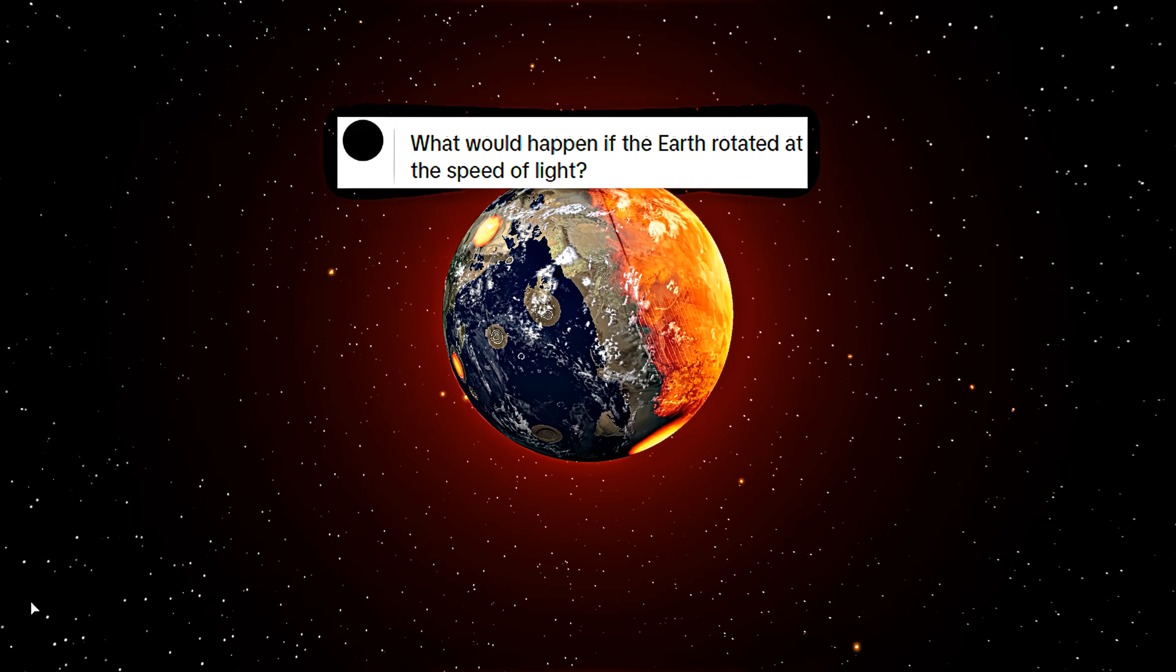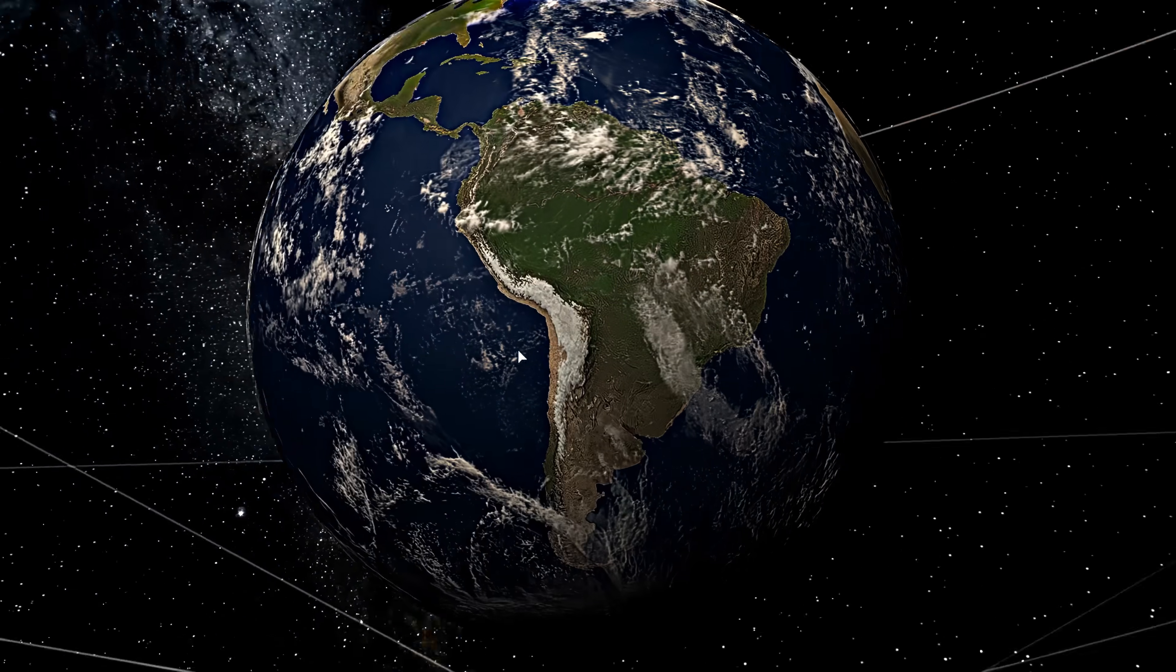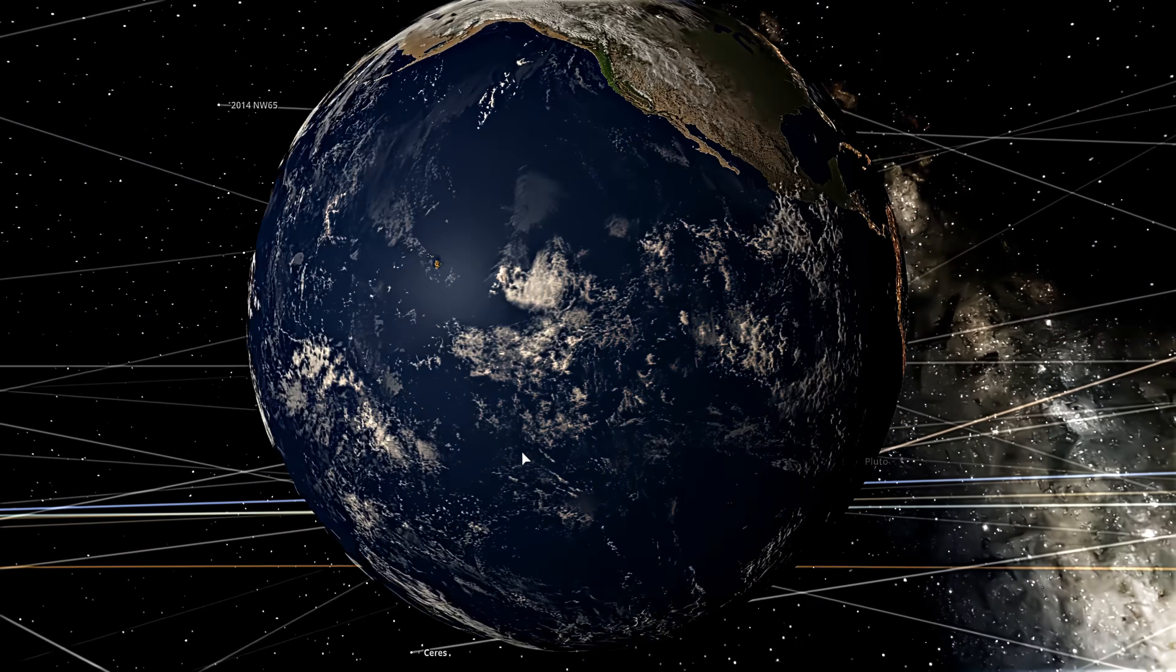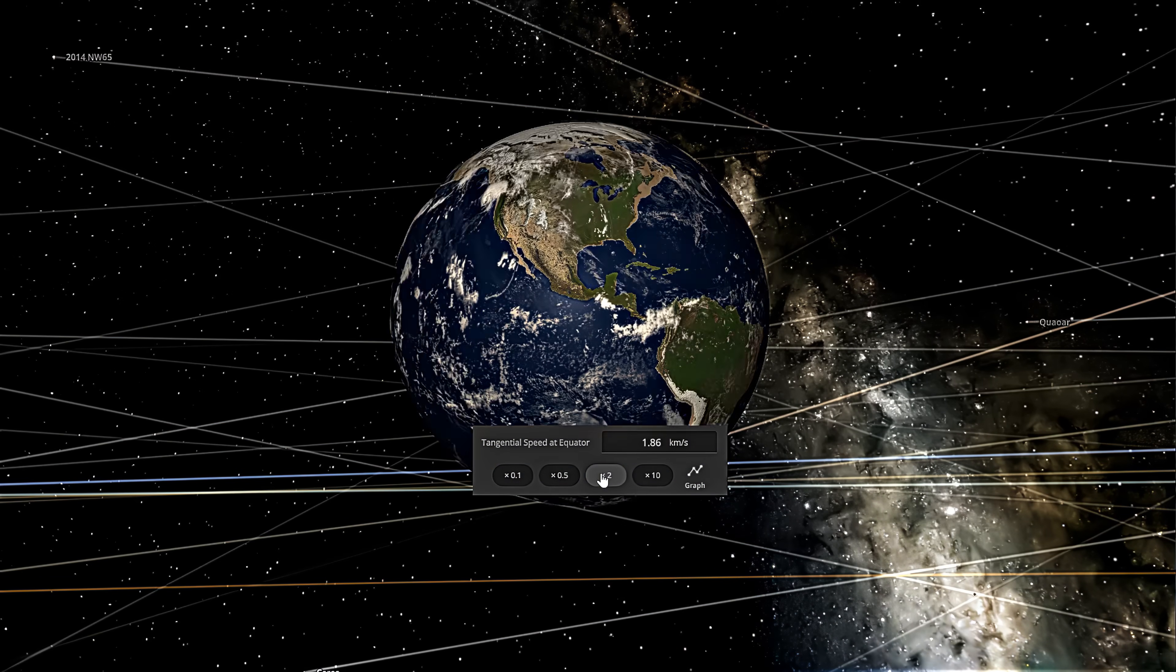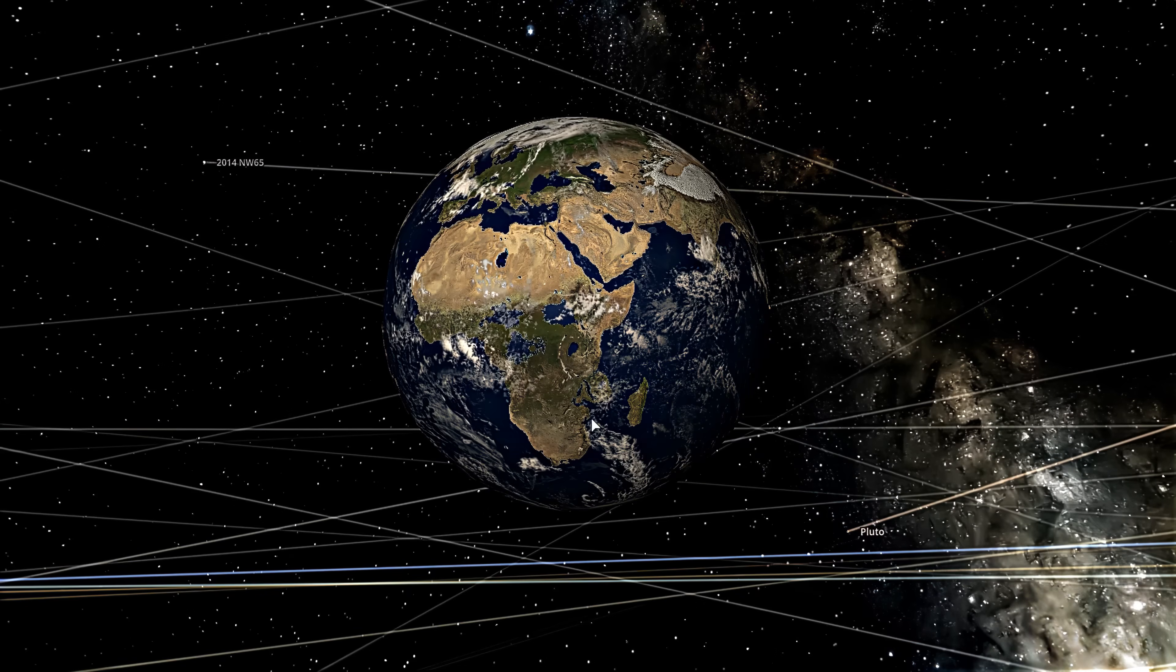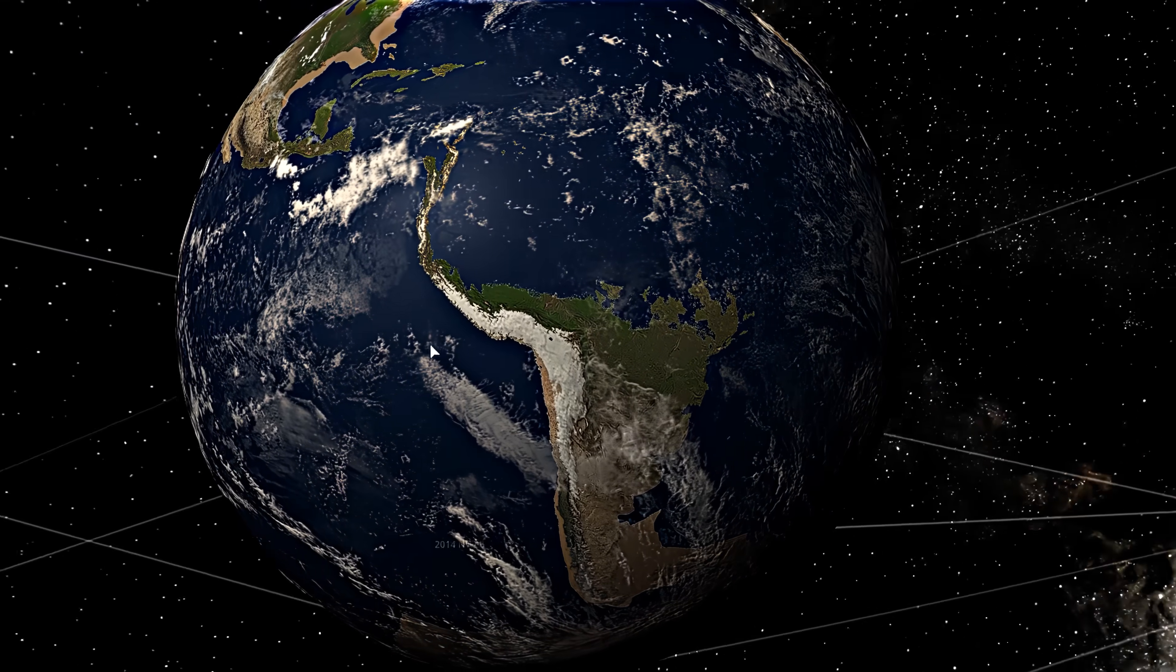What would happen if Earth rotated at the speed of light? So let's start slowly and double the rotation speed of the Earth. The sea started swallowing some parts, but nothing major. I can't see any significant difference. So let's increase it a bit more. Now things are getting fast. We can already see the sea taking over Africa. Brazil is also suffering from the speed of the Earth.